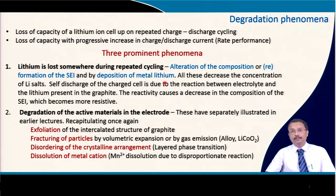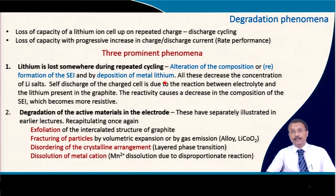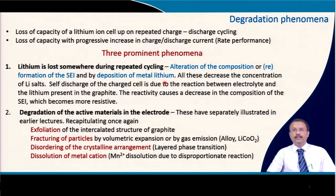That environment is completely changed and you cannot expect that the lithium will exactly go back and sit in the respective position the way it was in the virgin state. That will certainly lead to poor Coulombic efficiency. The second phenomenon is SEI layer formation — some part of the lithium is lost in the negative electrode because of SEI formation. In most instances, the SEI is pervious to lithium ion movement because it is a decomposition product of the electrolyte, so lithium can pass through.